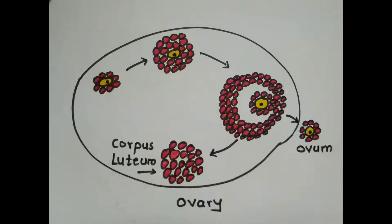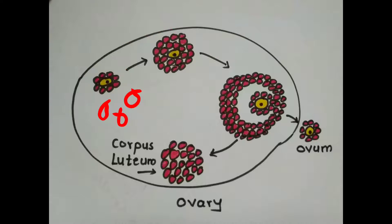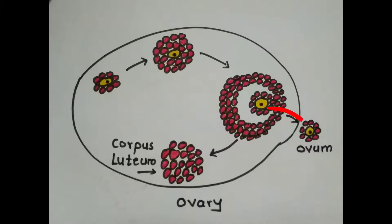In the ovary, there are many follicle cells. One follicle cell starts to develop, and inside the fully developed follicle there is an oocyte — a cell that forms the egg or ovum. Once the follicle develops completely, it breaks open and the oocyte comes out, which will subsequently produce the ovum.